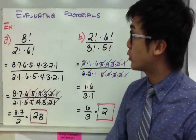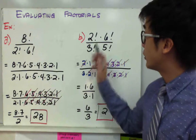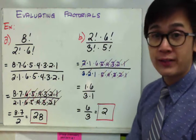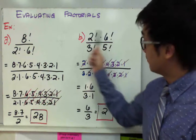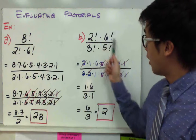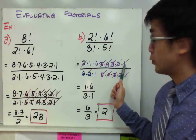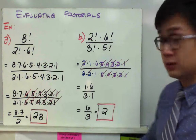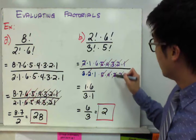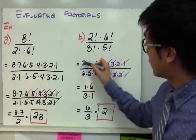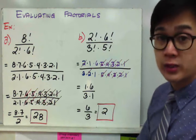That's how you evaluate factorial notation similar to example letter A. For example letter B, I'm working with 2 factorial times 6 factorial all over 3 factorial times 5 factorial. To evaluate the expression, expand each number: 2 times 1, times 6 times 5 times 4 times 3 times 2 times 1, over 3 factorial times 5 factorial. Start canceling terms: 1, 2, 3, 4, 5 will be canceled, and 2 and 2 will also be canceled. I'm left with 1 times 6 all over 3 times 1, which gives me 6 over 3, equal to 2.